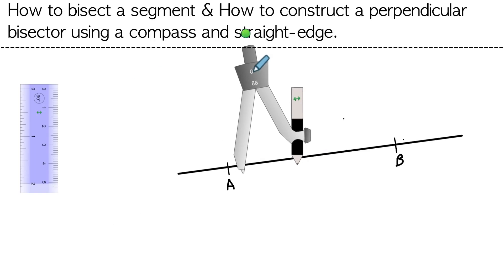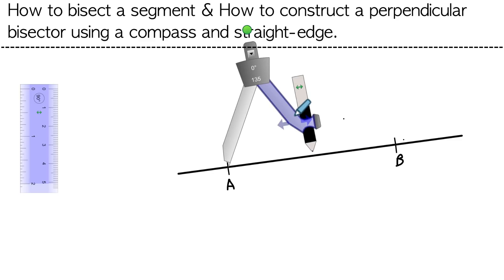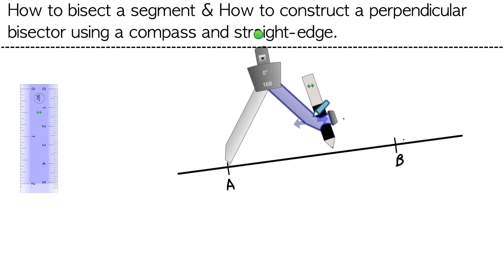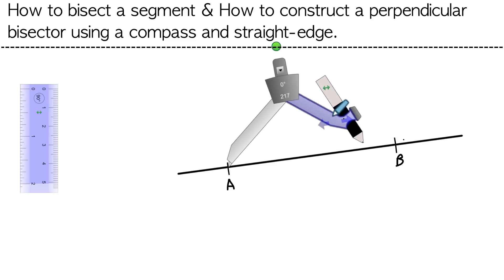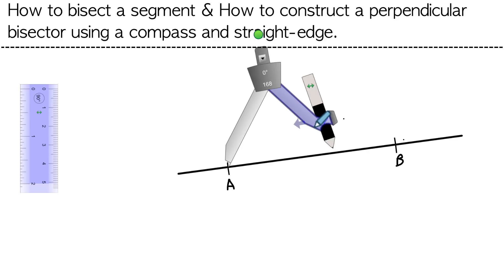So bring your compass and position the pointy end on either A or B. It doesn't matter where you start, you'll see in just a moment. And then we're going to extend the arm about halfway and then go just a little bit more than halfway. It doesn't have to be the full way, please, not the full way. Just look for halfway and there we go, a little bit beyond.